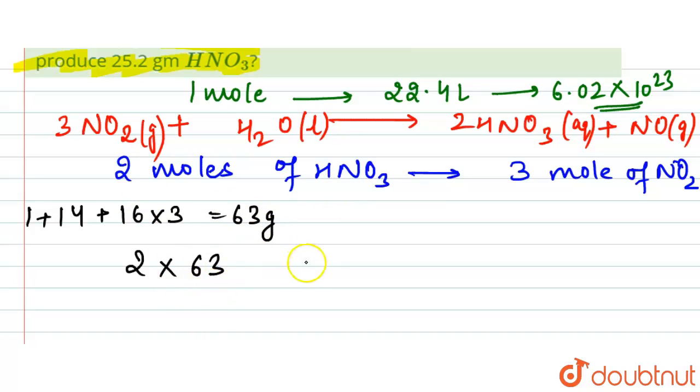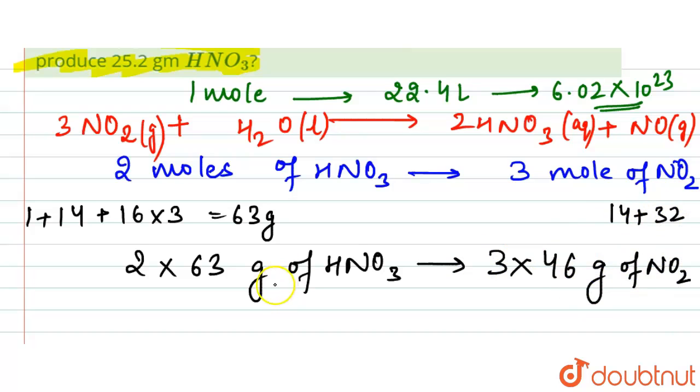2 × 63 grams of HNO3 will be produced by 3 × 46 grams of NO2. The molecular weight of NO2 is 14 + 32 = 46 grams. So 126 grams of HNO3 is produced by 138 grams of NO2.